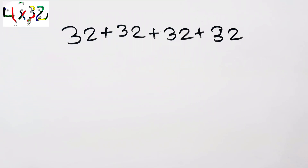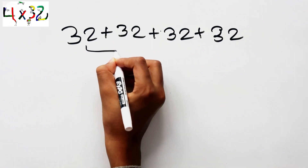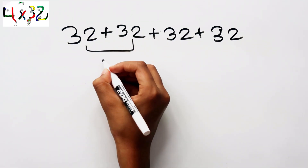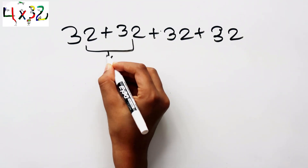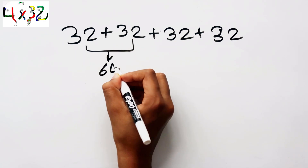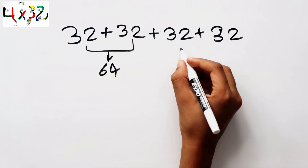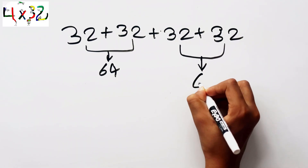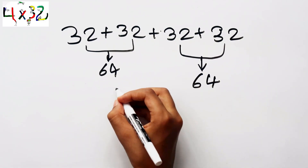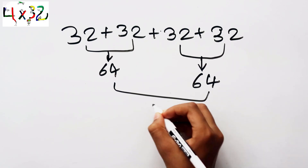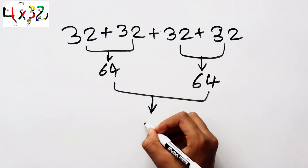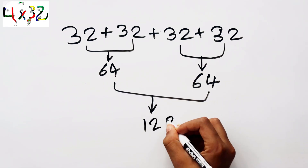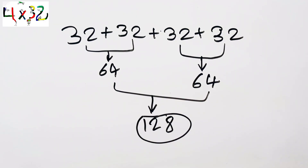Let's add them in a different way. Thirty-two plus thirty-two equals sixty-four. Another thirty-two plus thirty-two equals sixty-four. Sixty-four plus sixty-four equals a hundred and twenty-eight. The answer is a hundred and twenty-eight.